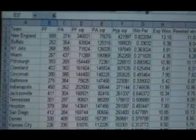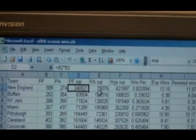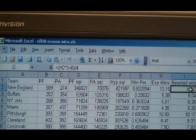Put points for, points against, and simply put in your formulas for the squares, win percentage, and when you're reverting to the mean, triple your season wins, add eight, and divide by four.